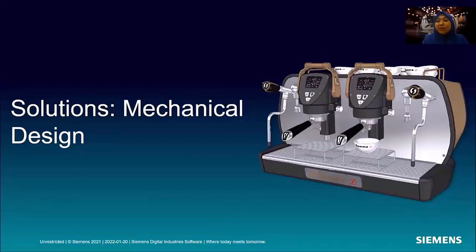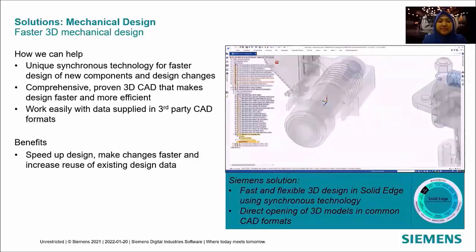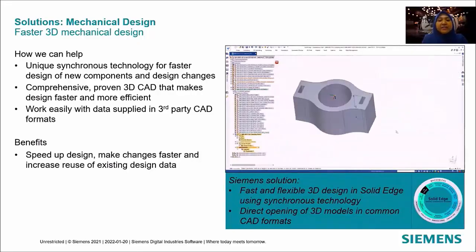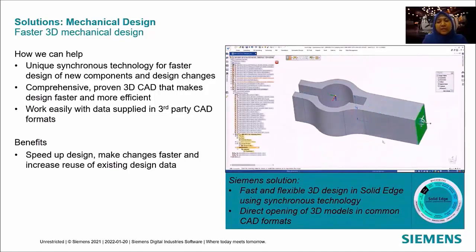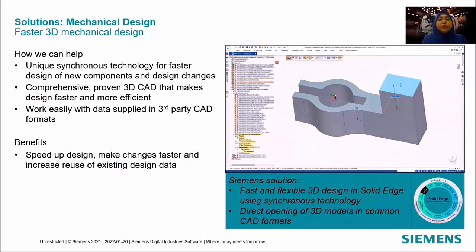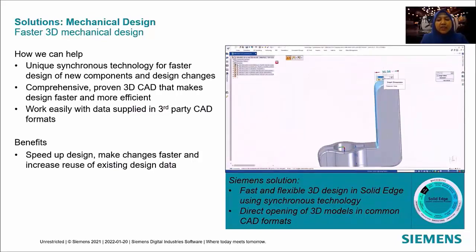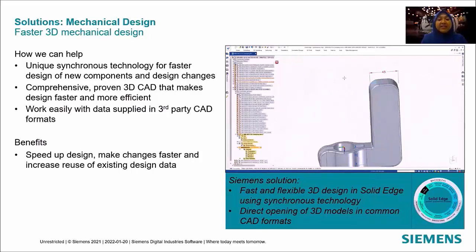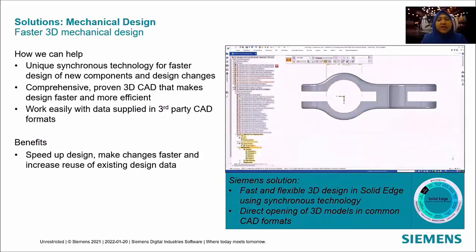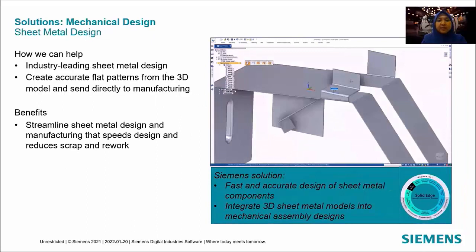Next up is the solution for mechanical design. In order to create faster 3D mechanical designs, Siemens has introduced the unique synchronous technology in Solid Edge. This is a proven 3D CAD tool that works easily with third-party CAD formats. With Solid Edge, you can speed up creating your design, make changes faster, and increase reuse of existing design data.